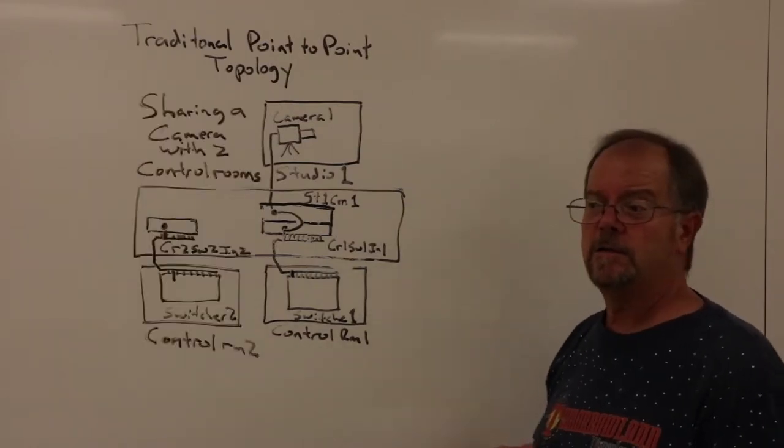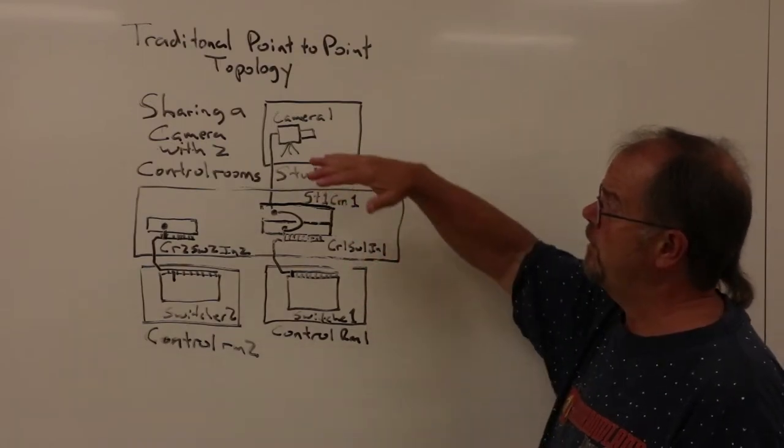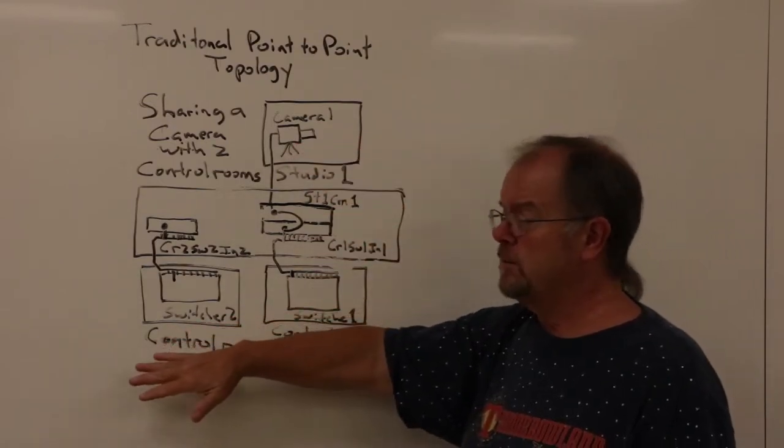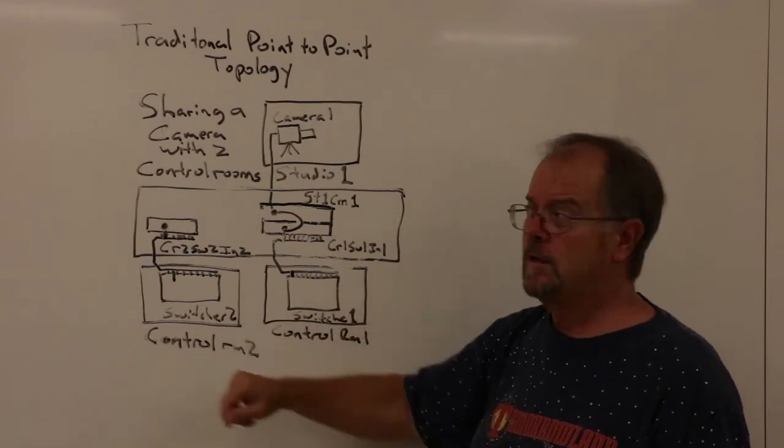A common scenario in a production studio is that you might want to be able to share the camera that is in Studio 1 with the switcher that's in Control Room 2.